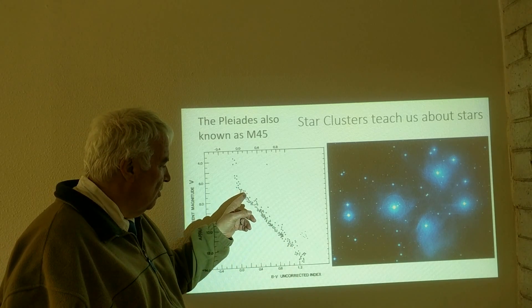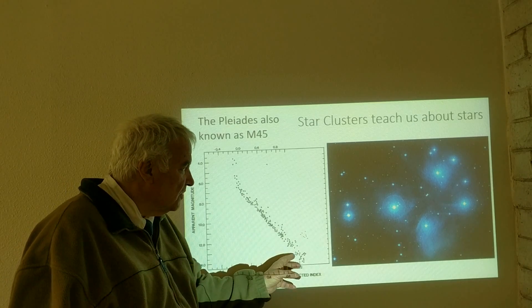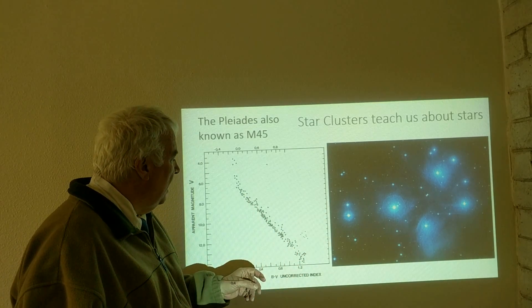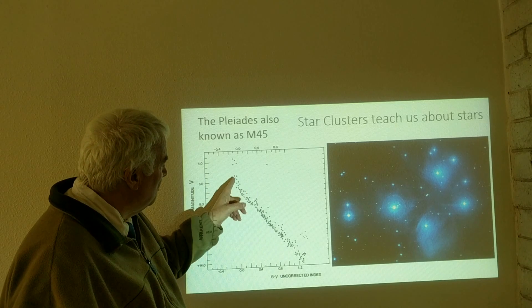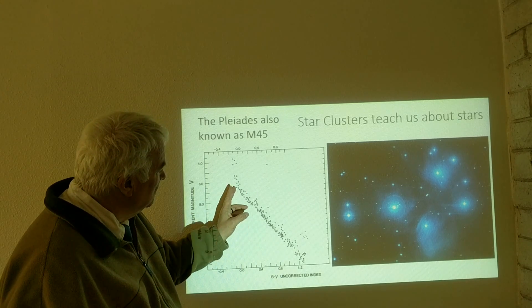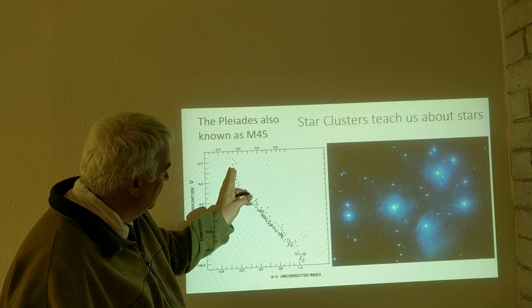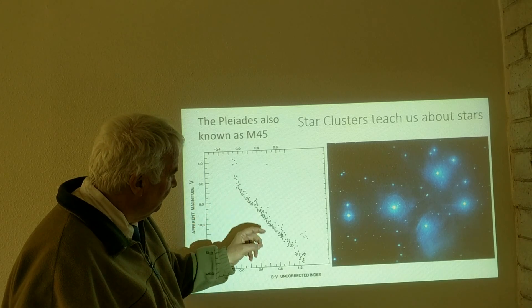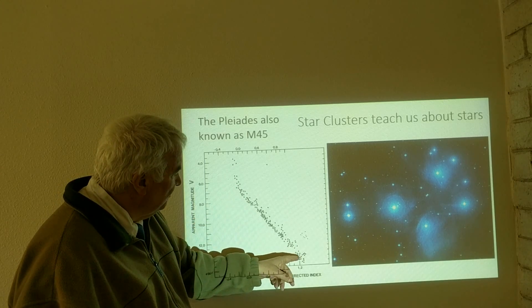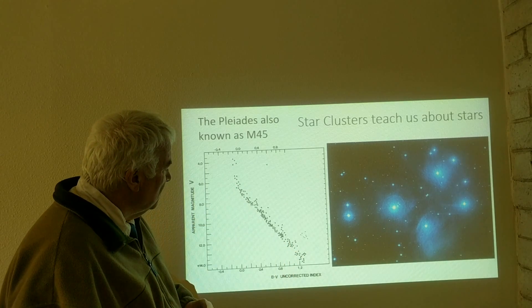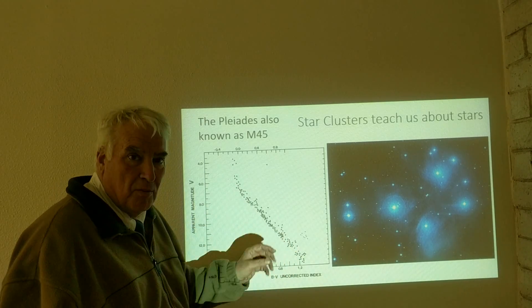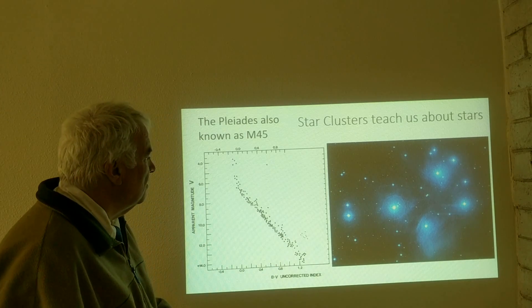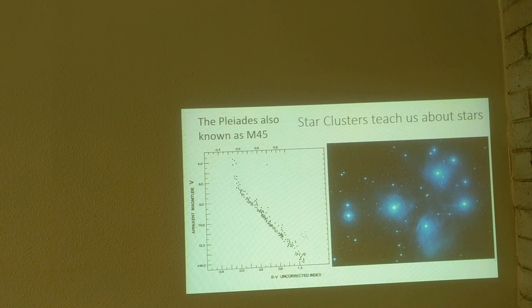We see a remarkable trend: the brighter the star is, the bluer it is. Likewise, the redder the star is, the fainter it is. There are some stars at the top which seem to indicate that the trend changes direction right about there, and we'll talk about that more later on.